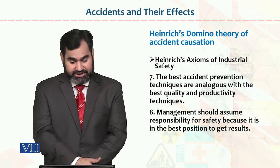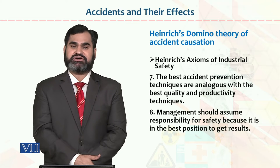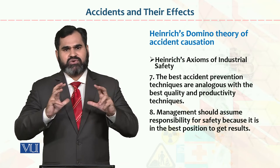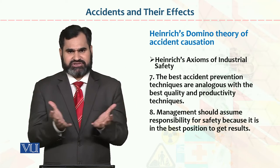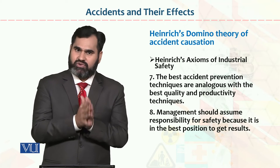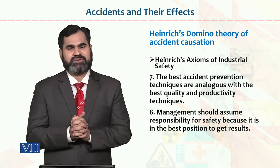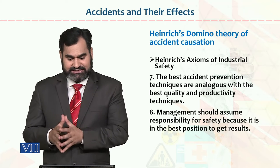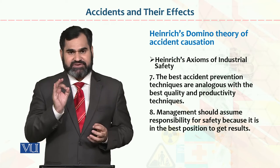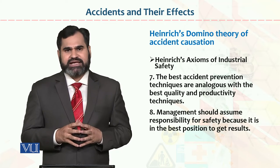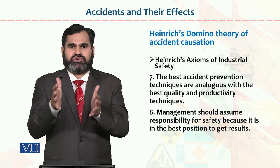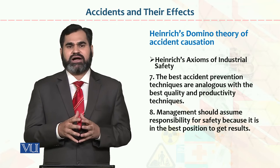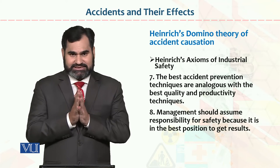The best accident prevention techniques are analogous with the best quality and productivity techniques — something is going to happen and you have to control it by doing all maximum possibilities to prevent recurrence. Management should assume responsibility for safety because it is in the best position to get results. Safety is the best mechanism to control injury; if all safety-related aspects are followed, chances of accidents are greatly reduced.